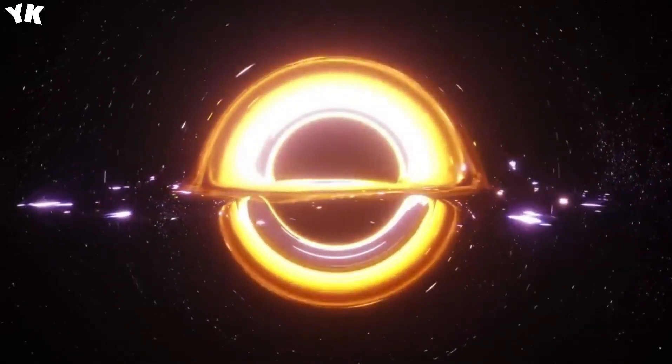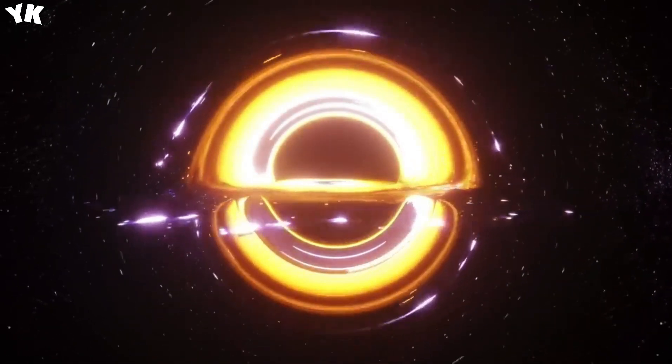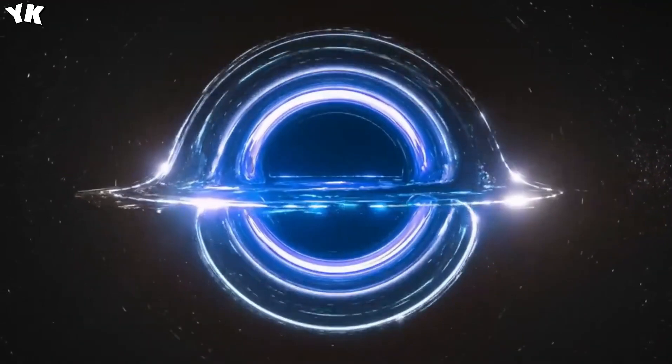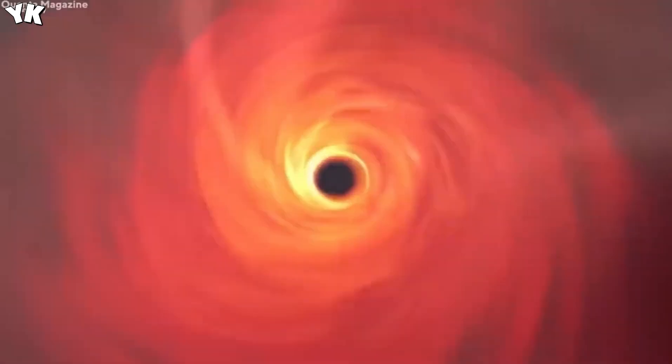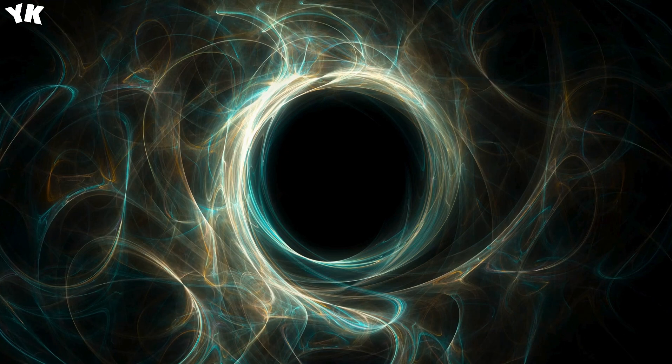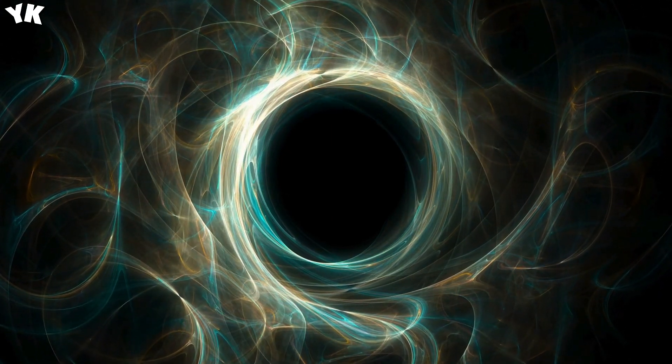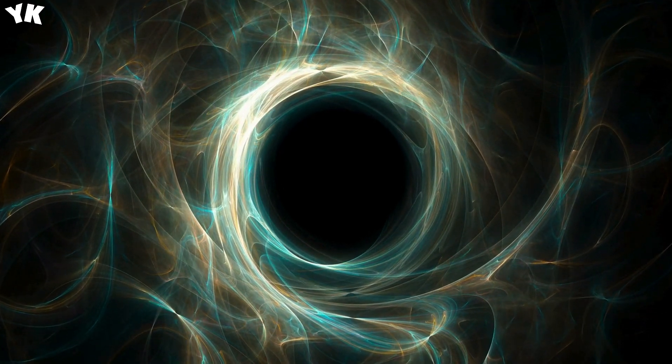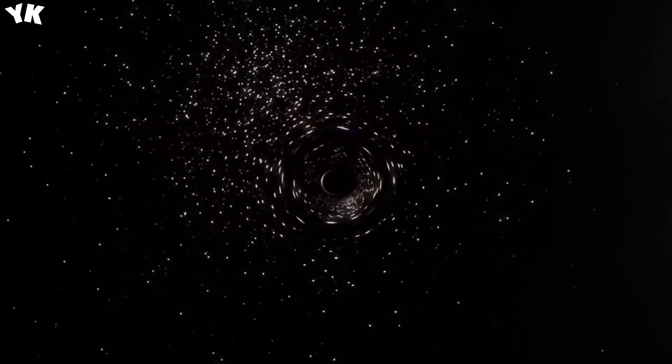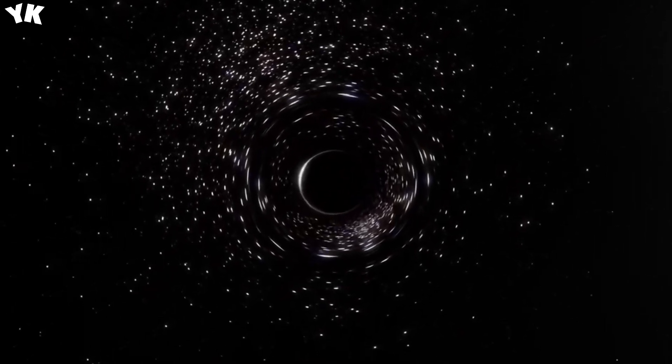The photographic data revealed that black holes possess intricate layers, challenging the conventional perception of them as singular entities of pure nothingness. Through meticulous analysis and image stitching, researchers discerned three distinct layers within a black hole. At the outermost boundary lies the event horizon, a pivotal threshold representing the point of no return. Once an object crosses this threshold, gravitational forces become insurmountable, ensuring its inexorable descent into the black hole's depths.